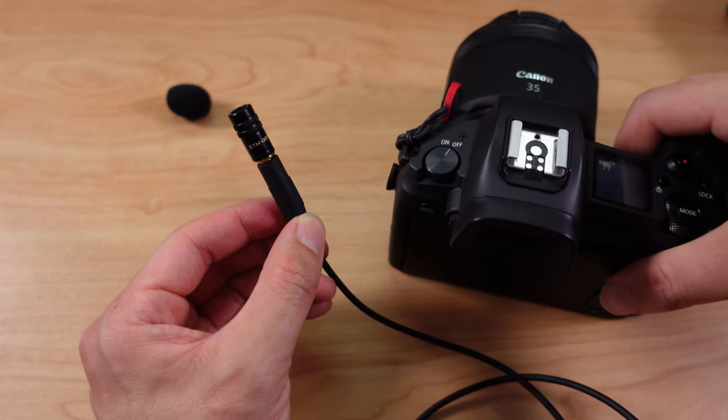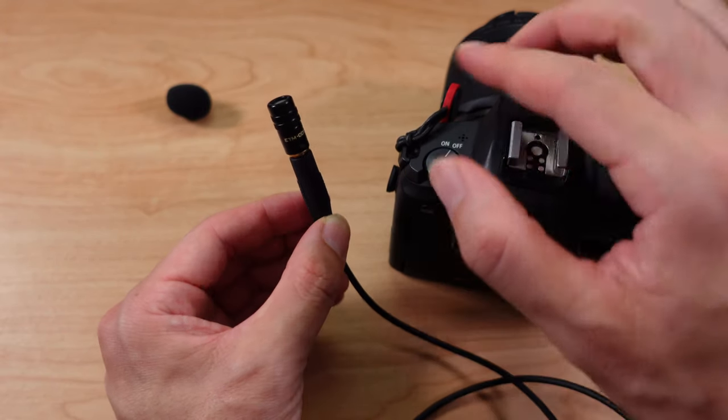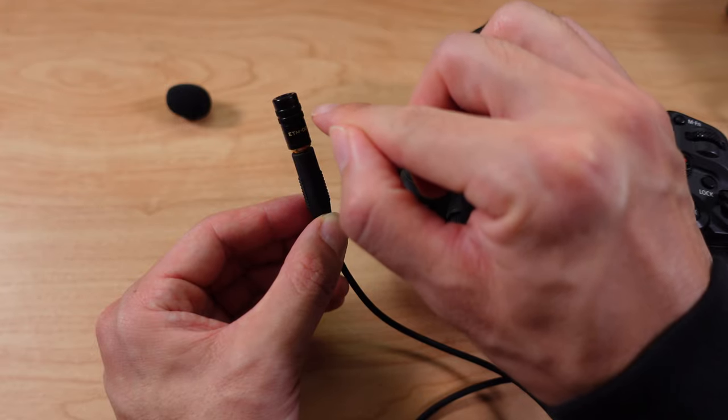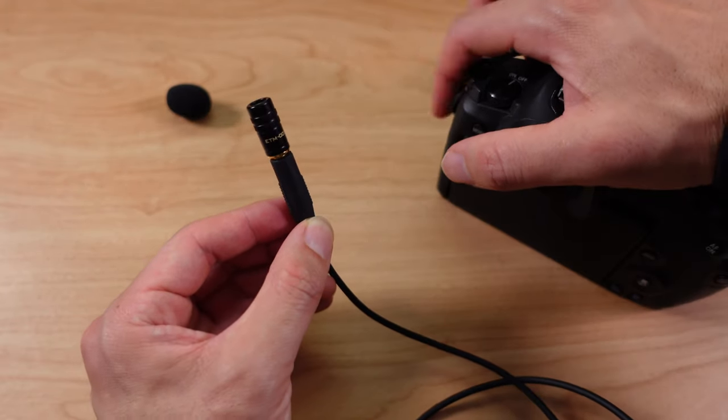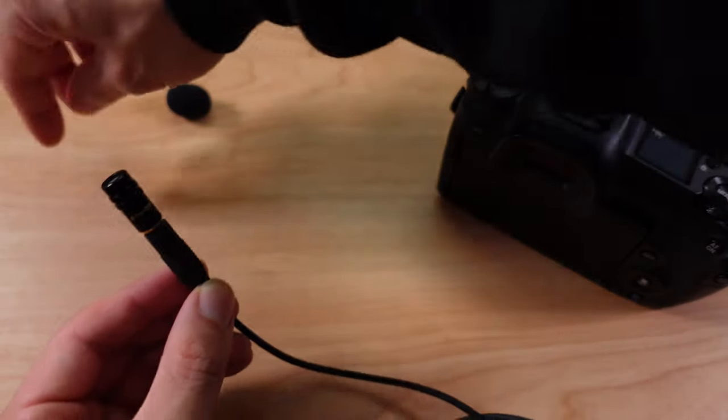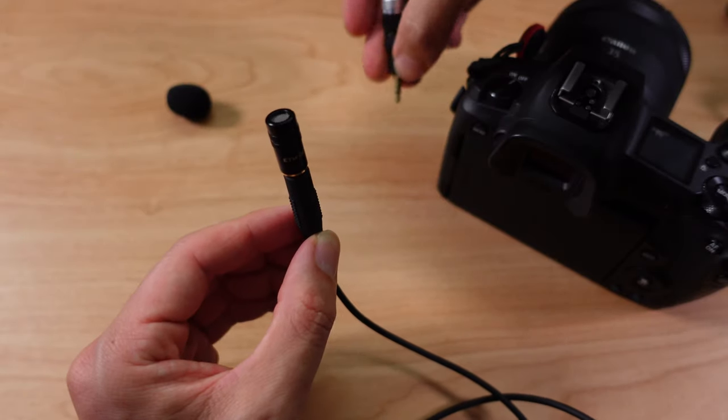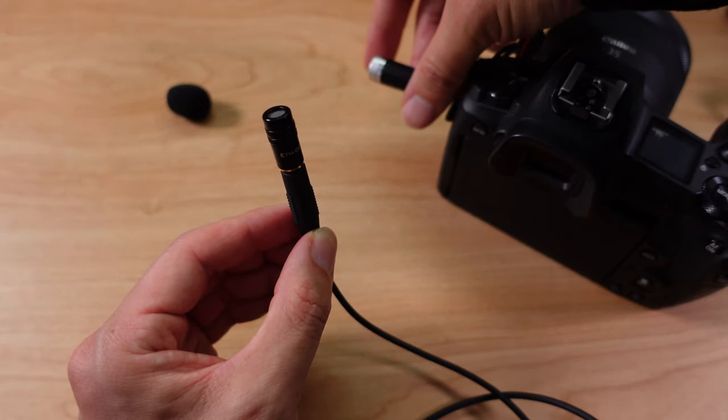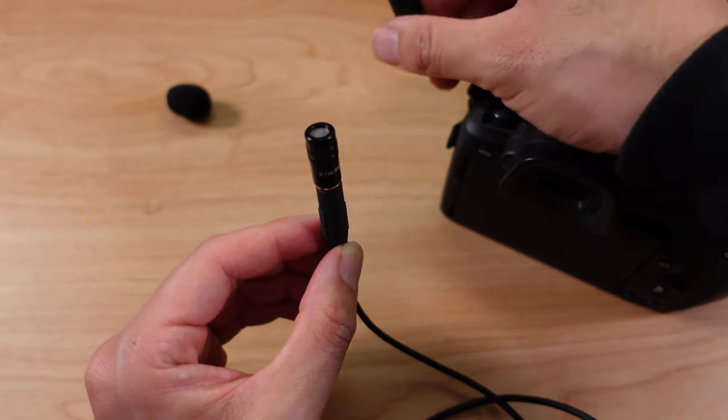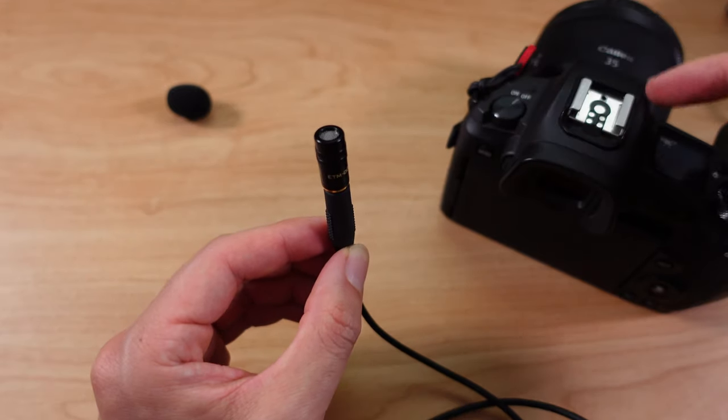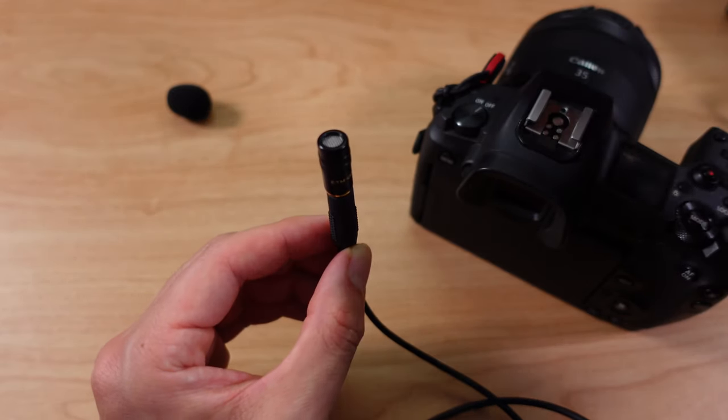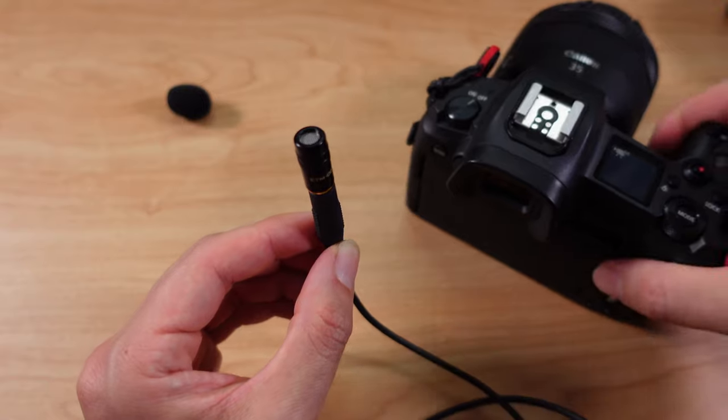You can just take the tip, the small end of it, and plug it directly into the side and it just sticks out like so. You can just go around and have better onboard audio than the built-in microphones that are on the camera. That's what it's supposed to sound like.